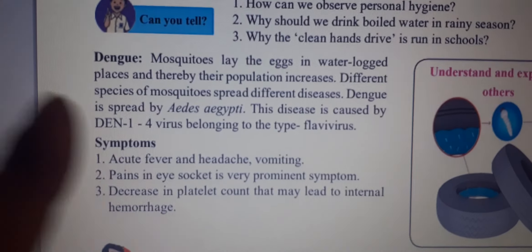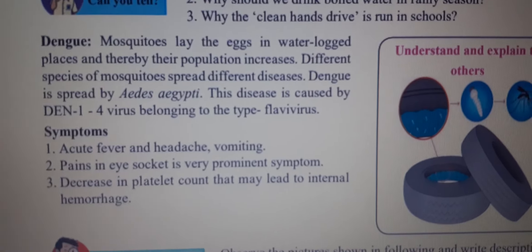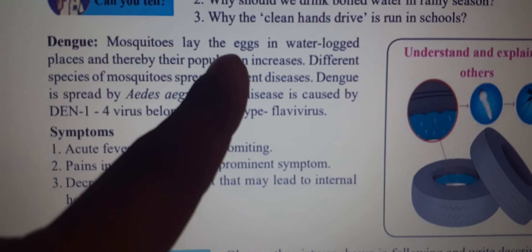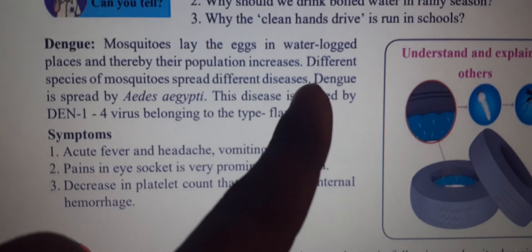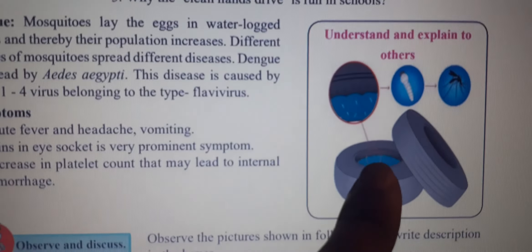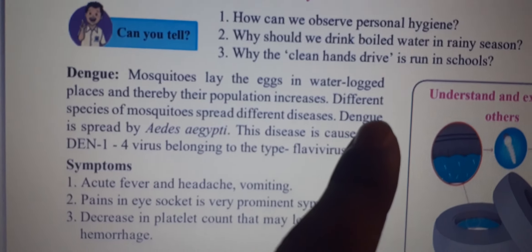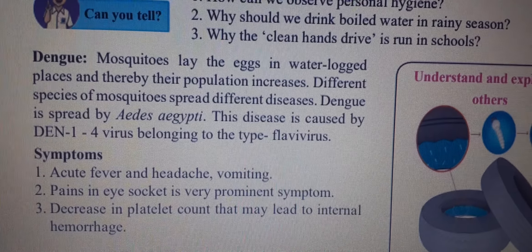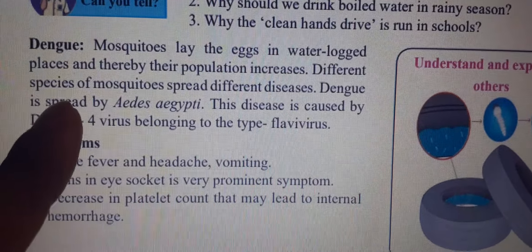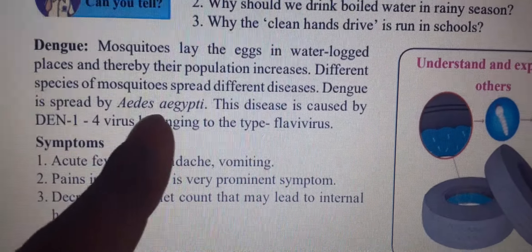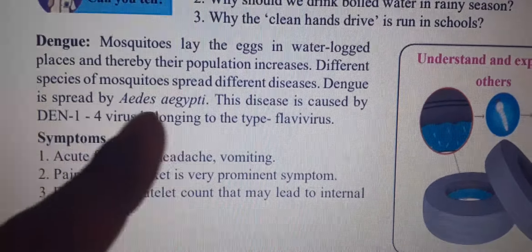Next is dengue. Mosquitoes lay eggs in waterlogged places and thereby their population increases. Different species of mosquito spread different diseases. Dengue is spread by Aedes aegypti, the household mosquito.